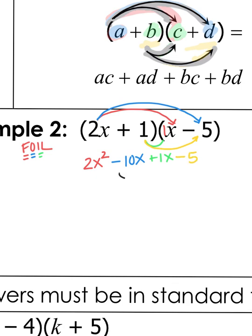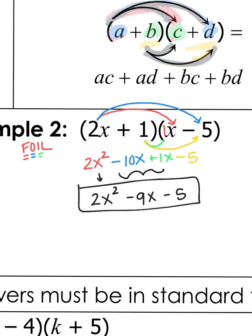And then Last — the last two in both parentheses — 1 times negative 5 is negative 5. Then combine like terms: negative 10X and positive 1X makes negative 9X. So the answer is 2X squared minus 9X minus 5. Notice those just follow down in order — I can't combine an X squared and an X.